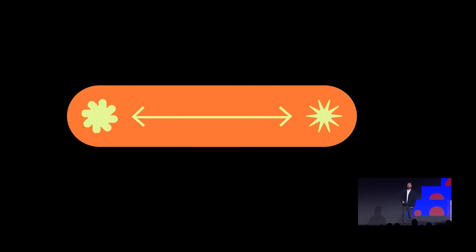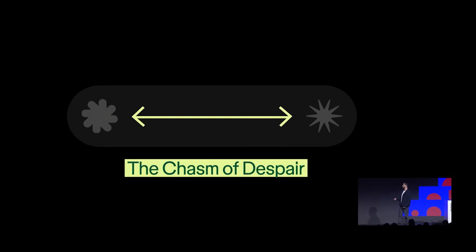This growing gap between design and code, I like to call the chasm of despair. The chasm is the enemy of adoption. This is where things drift further apart and trust in our system starts to erode. It's where our systems stop scaling and people stop using them. And teams go back to building everything from scratch, which widens the chasm further.